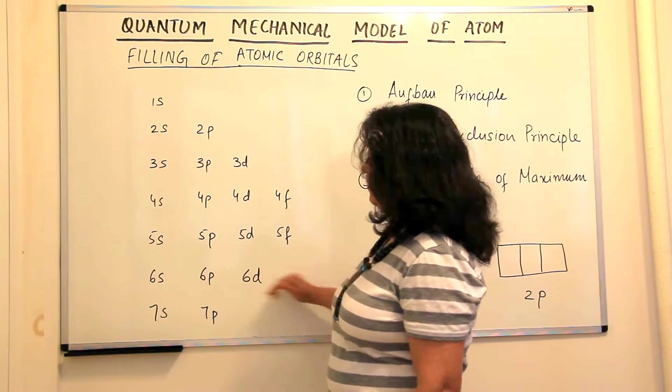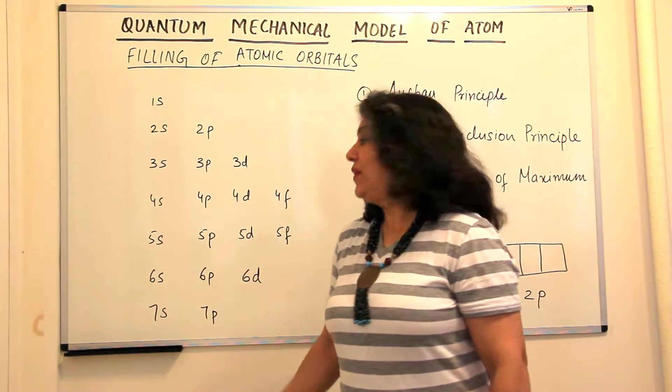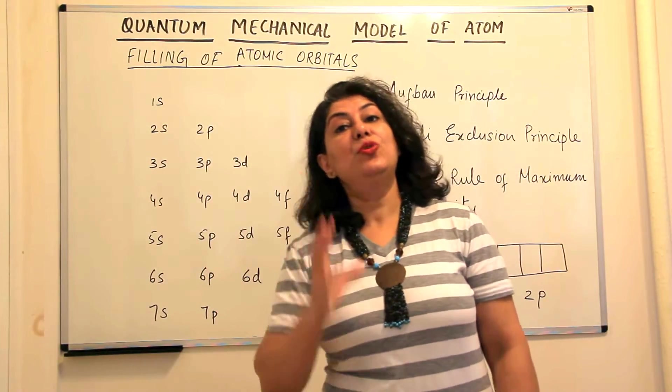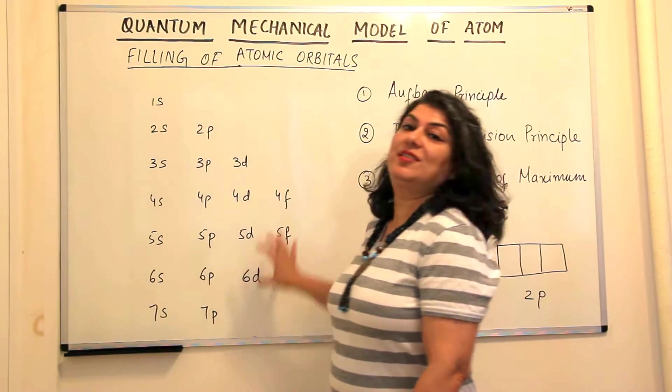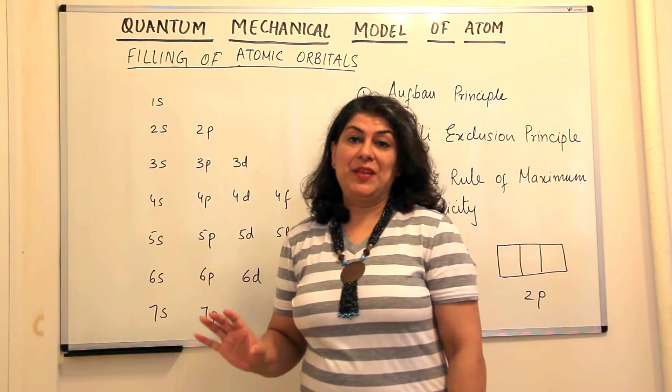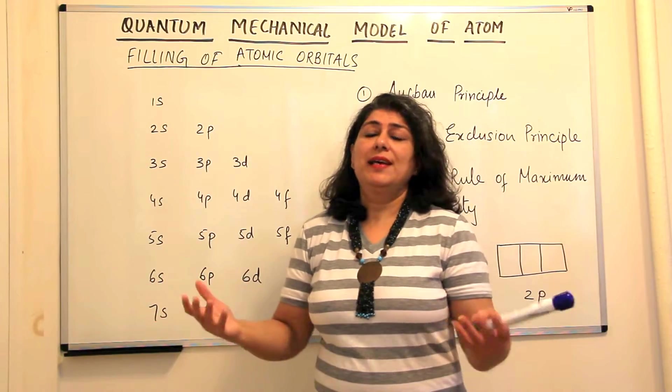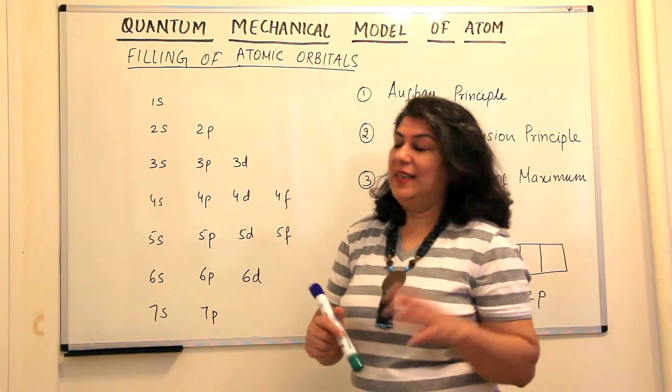7s and 7p. Why do we eliminate some of these is because all the elements that are known to scientists today can be accommodated in just these orbitals or these subshells. Therefore, since we do not know those elements, it's easy to keep them away to make it easier for us to learn.